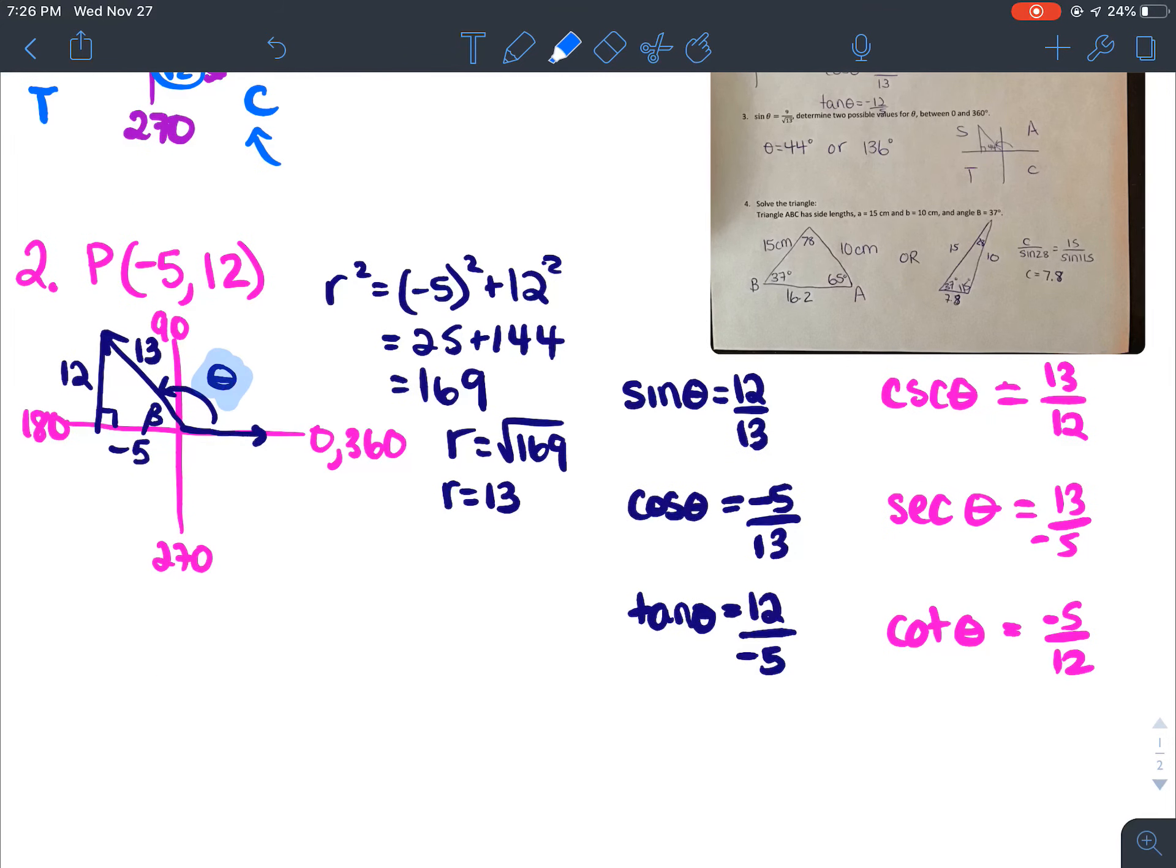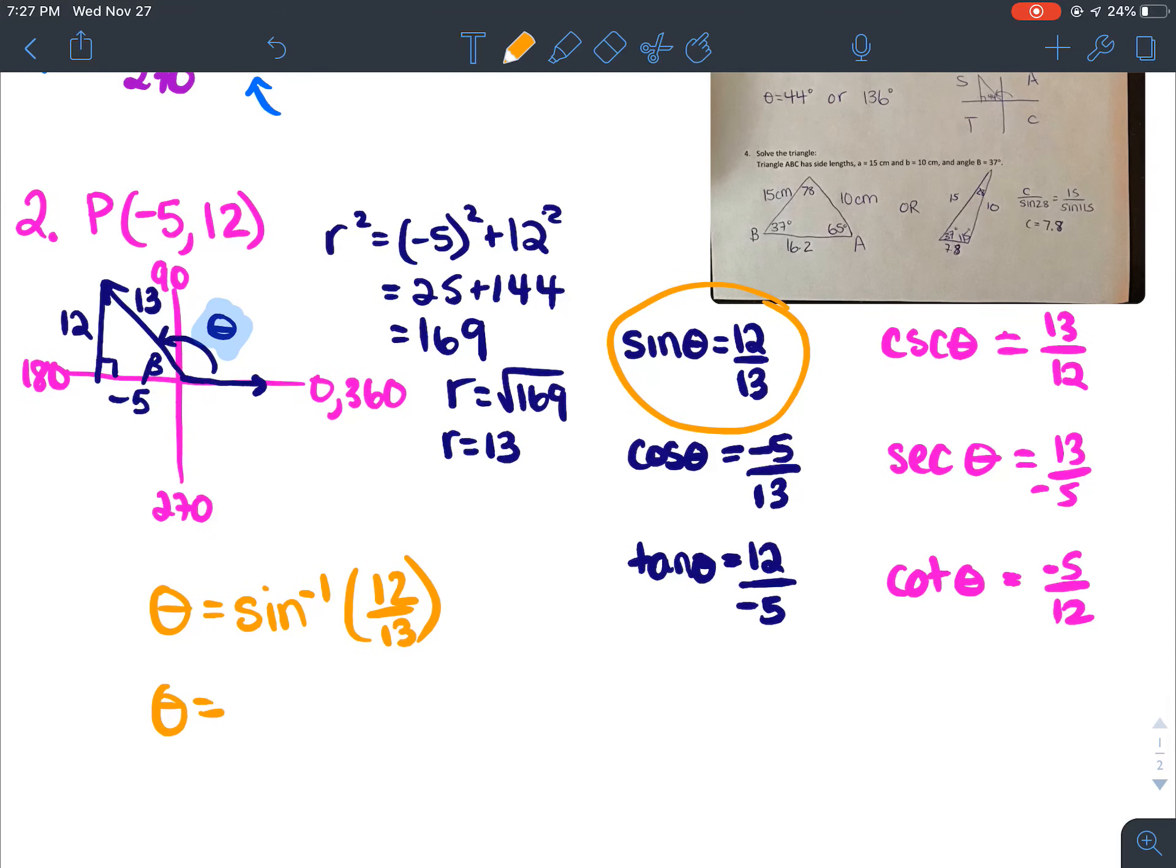Next question, if we wanted to find the principal angle, I would pick one of these ratios, no matter which one, but say you picked this ratio. Then theta, to find an angle, you can do the inverse sine, arc sine, 12 over 13. And on your calculator, that would give you a value of 67 degrees,